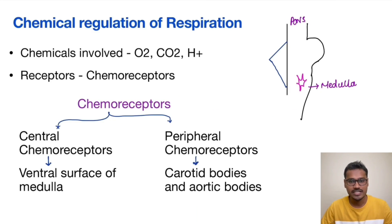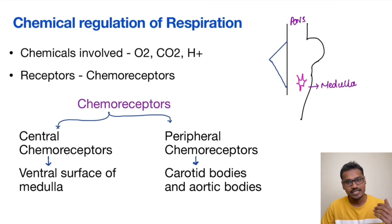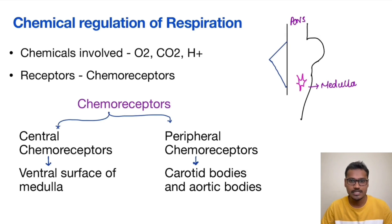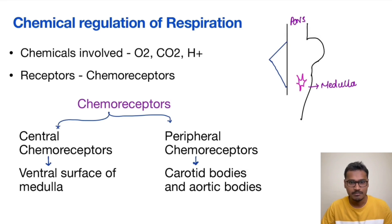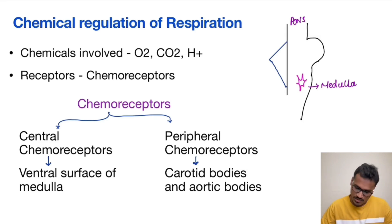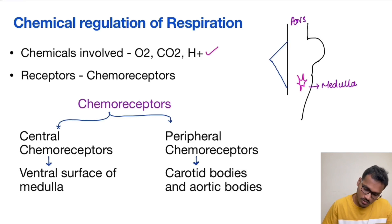Coming to the chemical control of regulation — the name itself says it. Basically, any chemical changes in the body like the change in PCO2, PO2, and H+ ions greatly influence respiration. We know that the normal respiratory pattern is generated by neural regulation, but these chemicals can modulate the effect of respiration. The chemicals involved are O2, CO2, and H+.